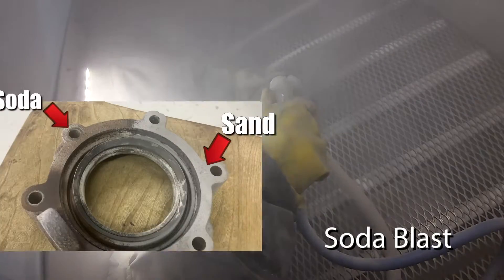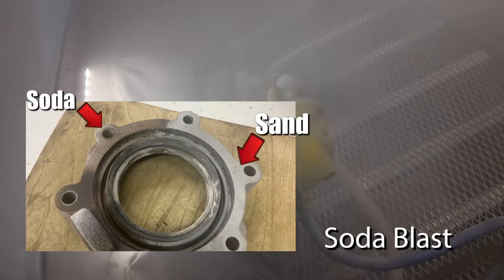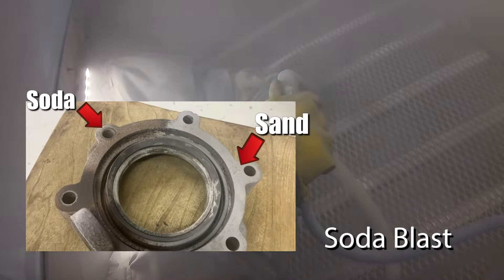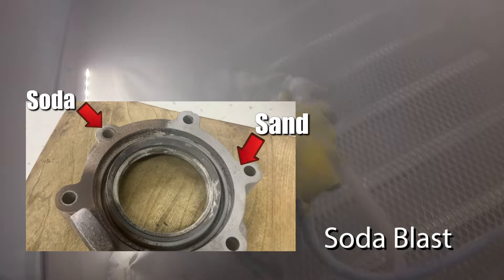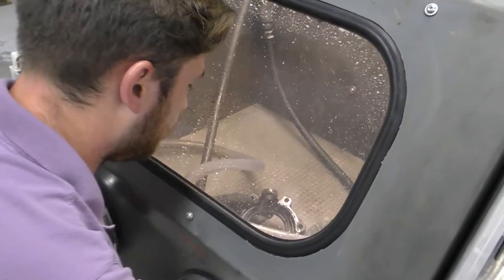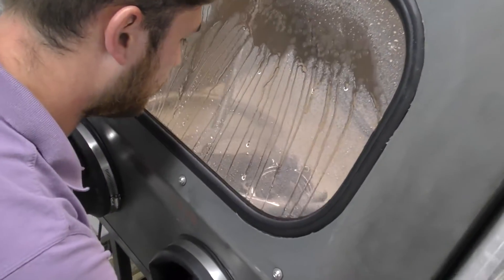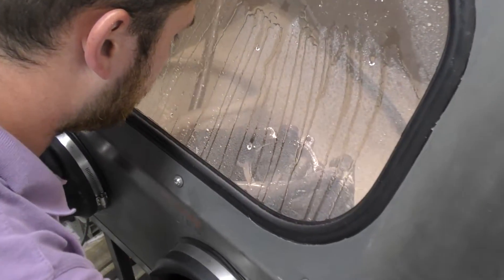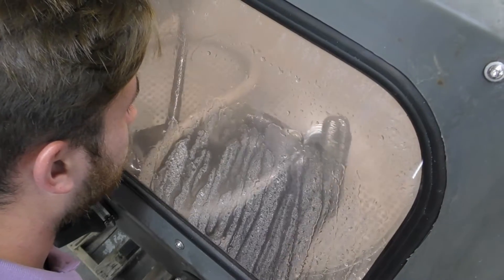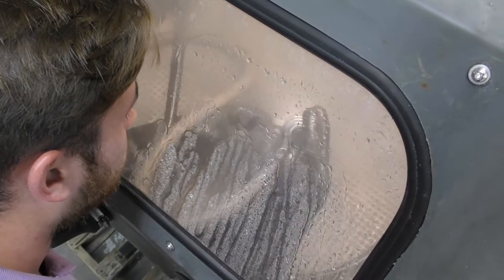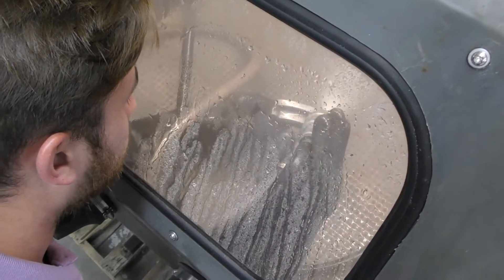Sandblasting also has a wider range of media choices rather than just one for specific applications. Sandblasting is usually used in the automotive industry; however, many people are currently realizing the advantages of a vapor honing system, which uses water mixed with media.